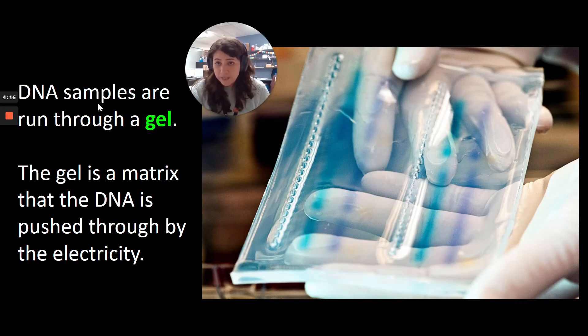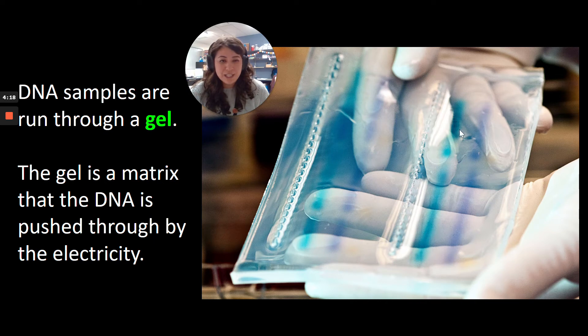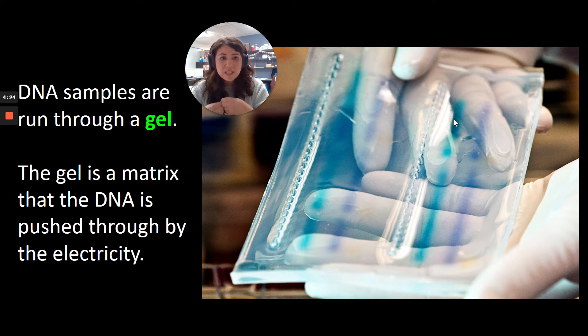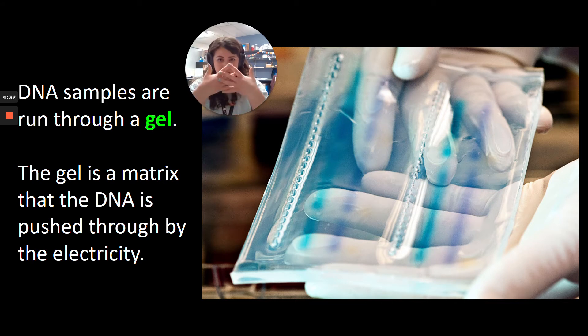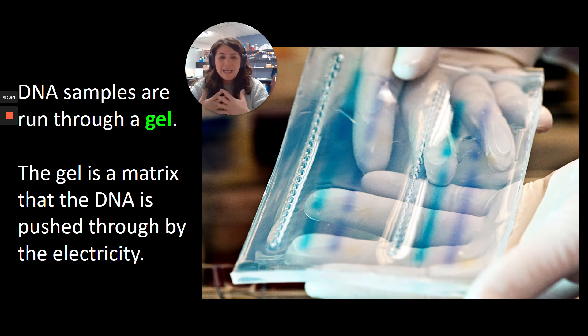So when we do this, we're always going to run our DNA samples through a gel. So the gel is going to look something like this. It looks very much like Jell-O. It feels like Jell-O. It's made of agarose, which is very similar to how gelatin works, except it's made from seaweed instead of from animals. So this gel is a matrix. It's like a mesh. And that mesh is going to be used to help us separate the pieces of DNA.